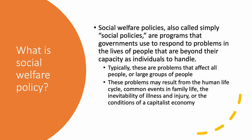These are programs that governments use to respond to particular problems in the lives of people that are beyond their capacity as individuals to handle. Typically these are problems that affect everybody, or large groups of people — many of them are inevitable parts of the human life cycle. For example, children can't take care of themselves. What happens if the parents can't take care of the children? Maybe the government would have to be the childcare institution of last resort — not that we want the government to take over childcare, but if parents can't, maybe the government should do something to support them.